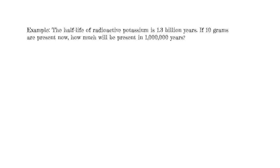In this example, we're given that the half-life of radioactive potassium is 1.3 billion years. If 10 grams are present now, how much will be present in a million years? This is a decay problem. The half-life means the material will decay by half in 1.3 billion years, so 10 grams decays to 5 grams after 1.3 billion years. If we only give it a million years to decay, not very much of this material is going to go away, because a million years out of 1.3 billion is a small amount.